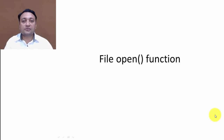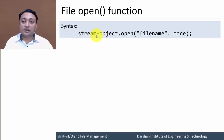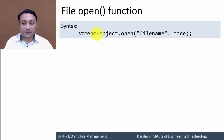Hello everyone. In this lecture we are going to discuss the file open function. It can be called using a stream object. If it is an input file, we will create an object of ifstream, and if it is an output file, we will create an object of ofstream. Through that object we can call the open function.